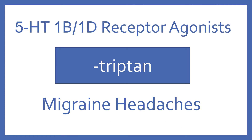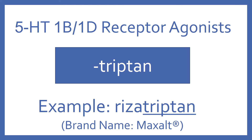5-HT1B/1D receptor agonists end in the suffix -triptan. These are for migraine headaches. An example of a 5-HT1B/1D receptor agonist is rizatriptan, and its brand name is Maxalt.